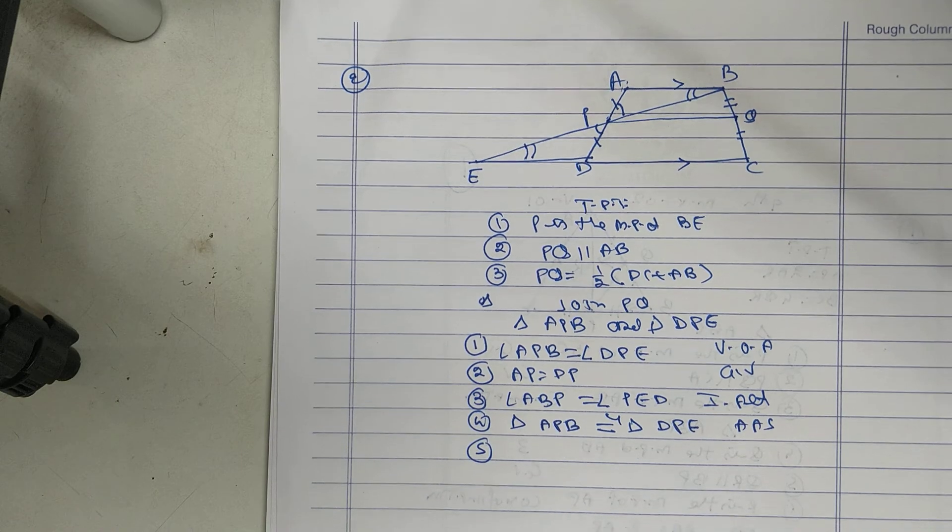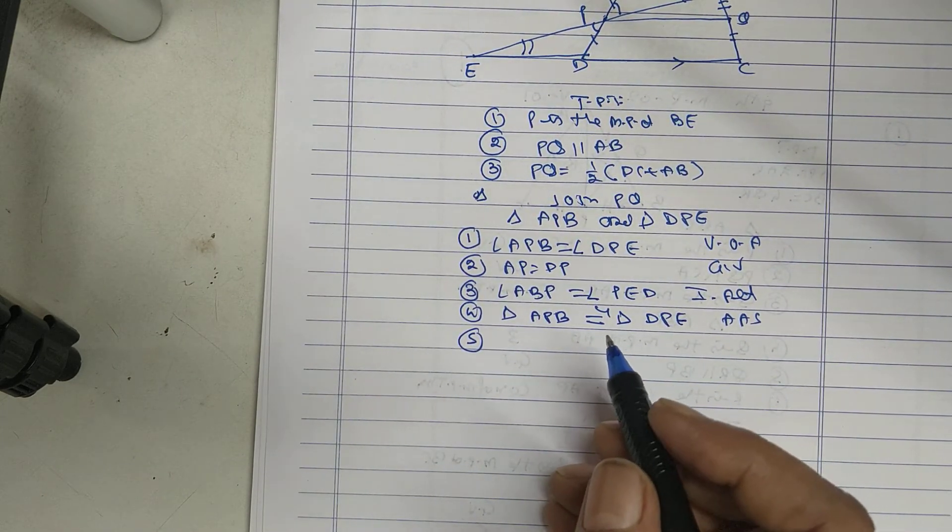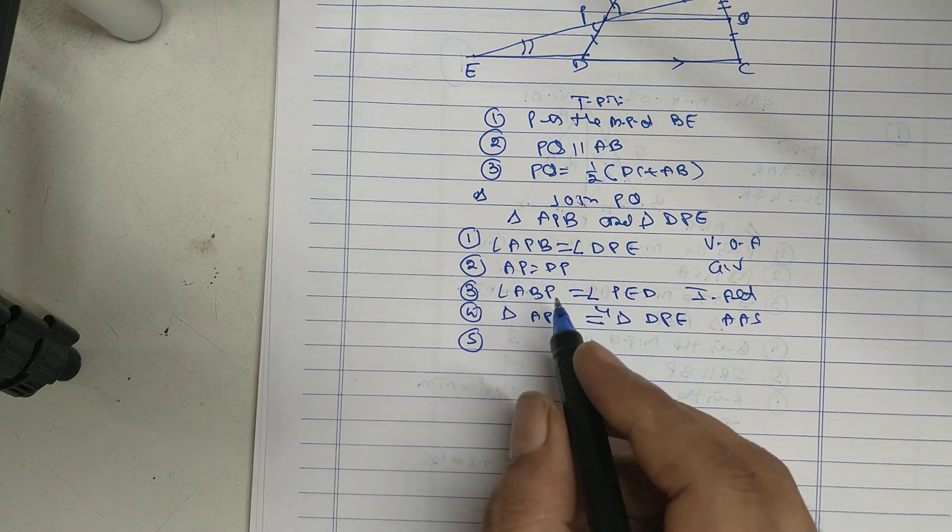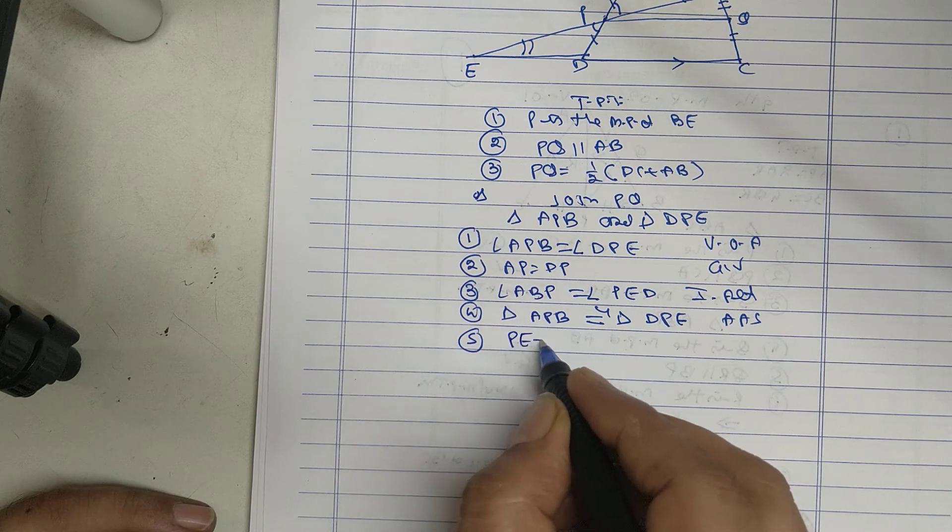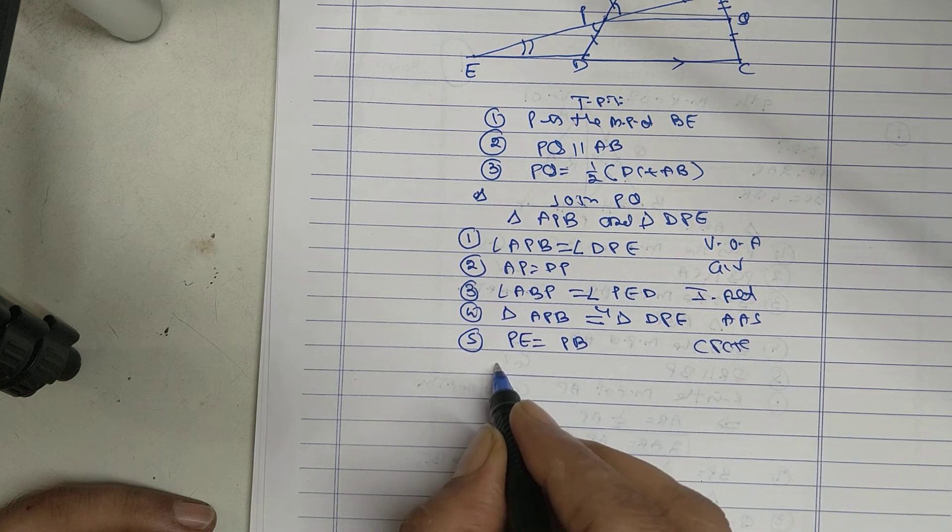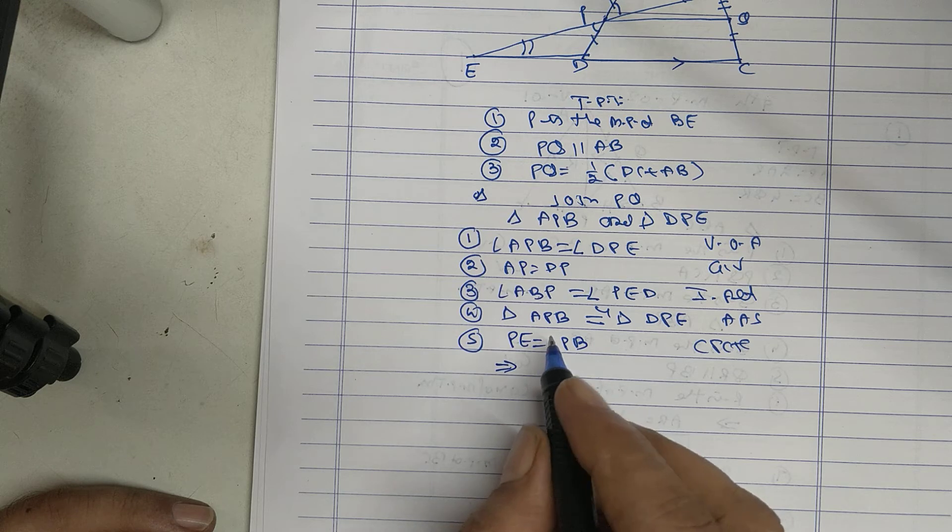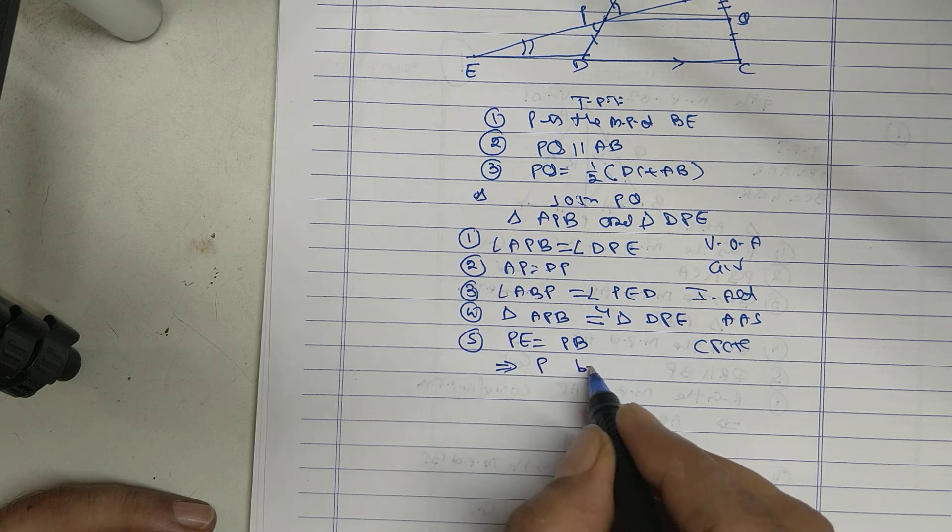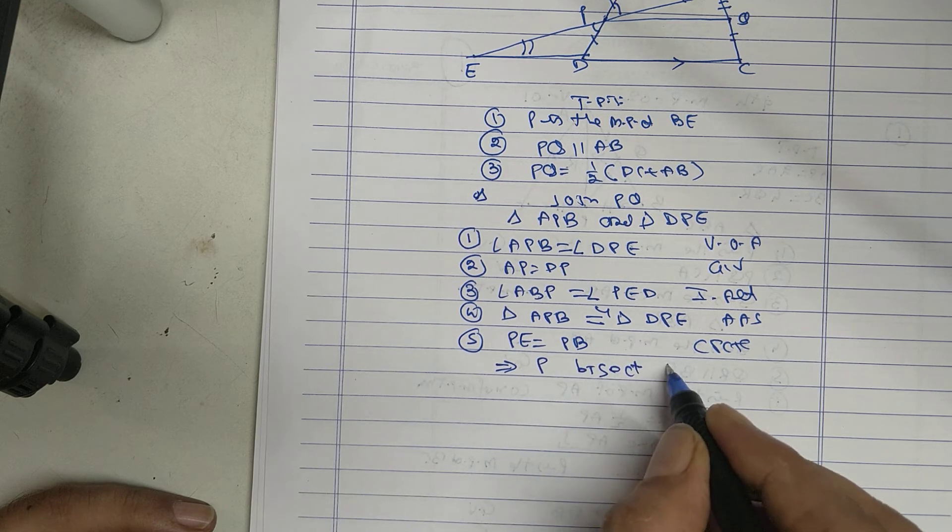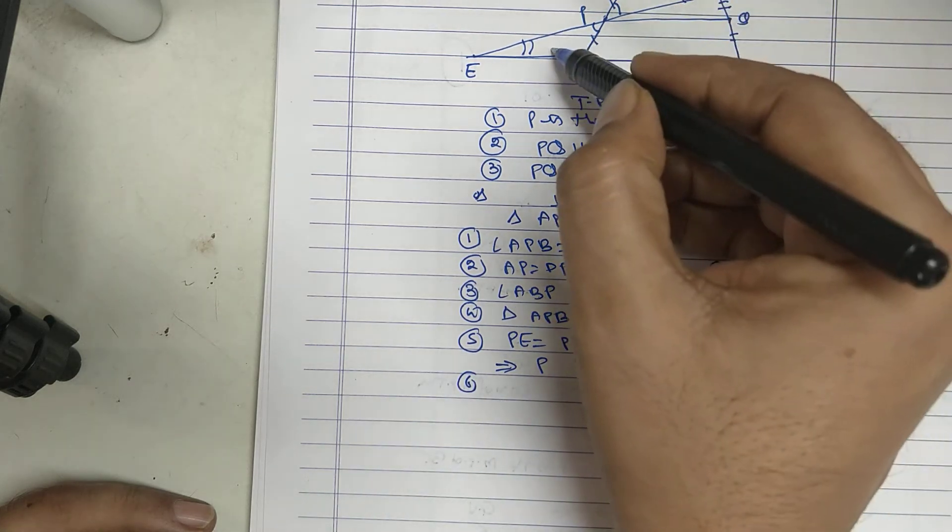Therefore, BP equal to PE. That implies that P bisects BE. Also AB equal to DE by CPCTC.